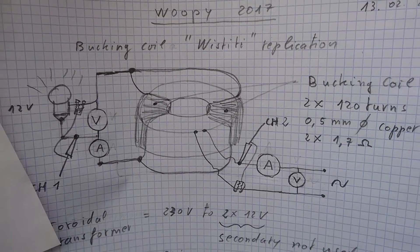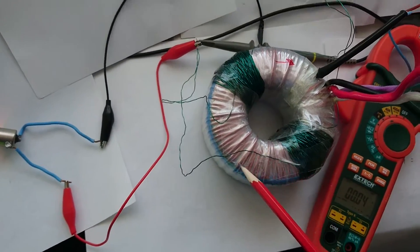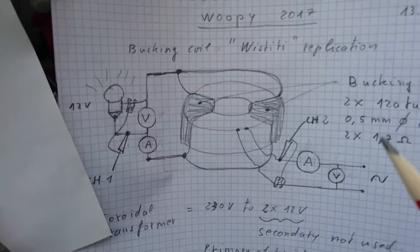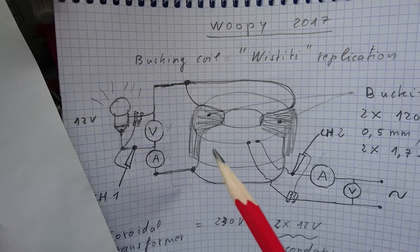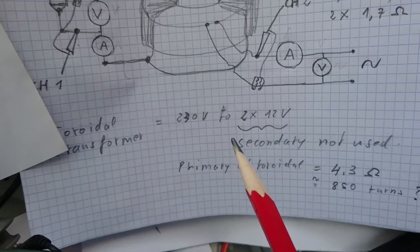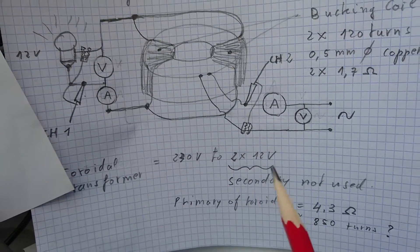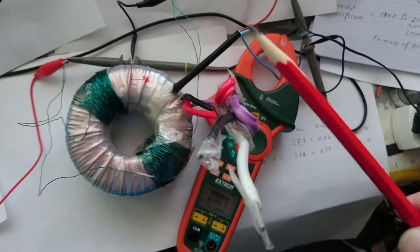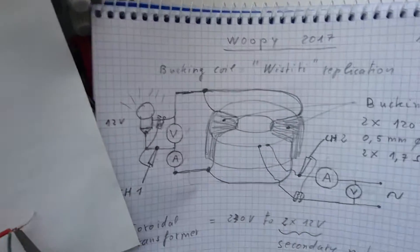You see here there is a toroidal transformer on the scheme. This toroidal transformer is basically 230 volts down to two times 12 volts, but the secondary is not used at all. You can see they are here, not used. I use only the primary.